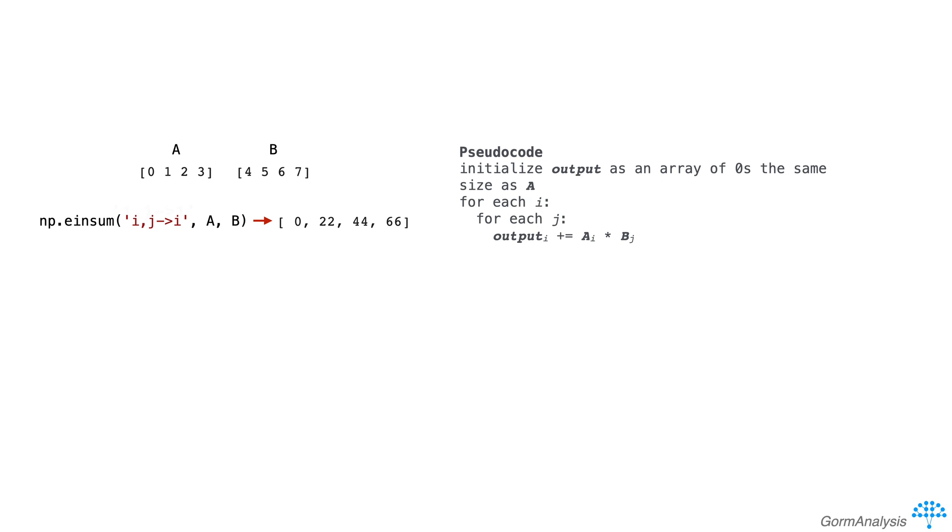So the first parameter of einsum is the subscript string. Assuming we're operating on two arrays a and b, it always has the form: subscripts for a's axis, comma, subscripts for b's axis, arrow, subscripts for output axis. In this case, a has one dimension, so we give it the letter i. b has one dimension, so we give it the letter j. And by using the letter i for the output array, we're saying the output array has one dimension and it's the same length as a. In other words, element a[i] will always feed into a corresponding output[i].